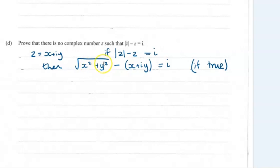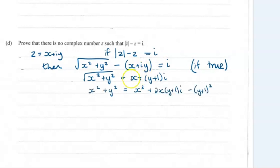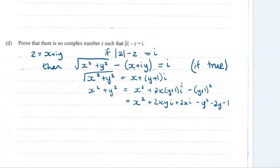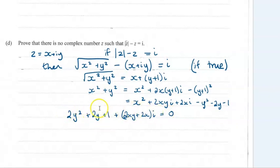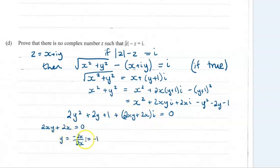Carrying that logic through and trying to solve it looks like this. Squaring both sides, remembering not to miss out the middle term, tidying that up, expanding the bracket, and bringing everything to the left hand side set equal to zero. We've got a real part that must equal zero and an imaginary part that also must equal zero. Starting with the imaginary part equal to zero, rearranging, we get y equals minus 1.